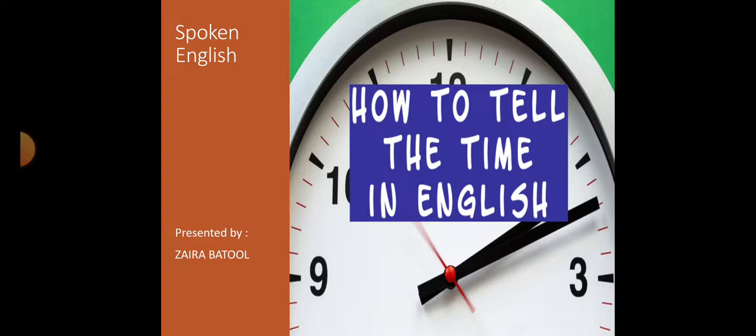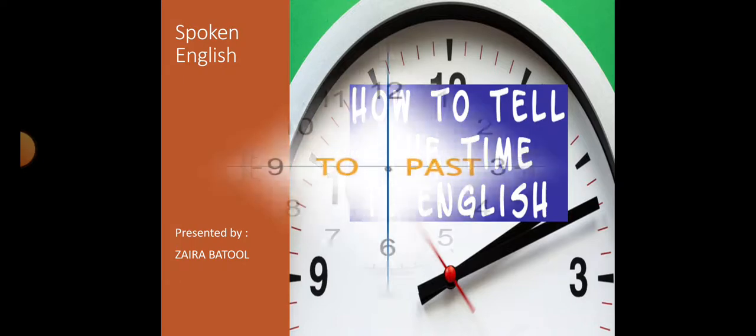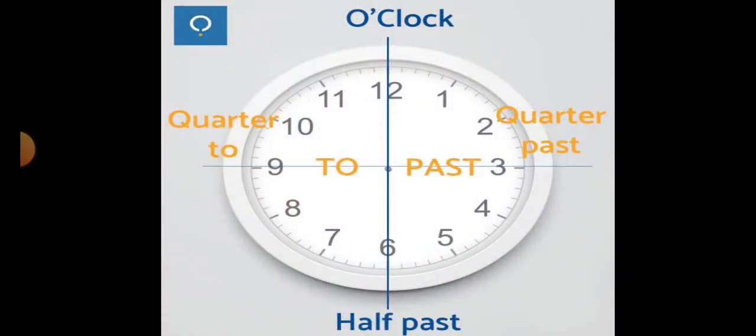So without wasting a single minute, let's move ahead. Yes, you can see viewers the clock in front of you. It is divided into two portions. One portion, first half, is having the word past. So whenever you will be telling the time in this portion you will say past, and when you will move to this portion you will say to.